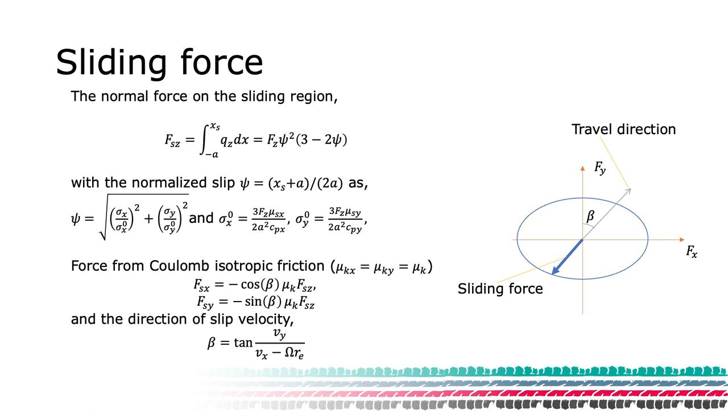If we assume that we have a coefficient of friction for sliding that is isotropic, the same in both longitudinal and lateral directions, we can formulate the direction of the force as the opposition of the motion. This can be expressed in the angle beta using a projection to get the longitudinal and lateral forces in the sliding part.